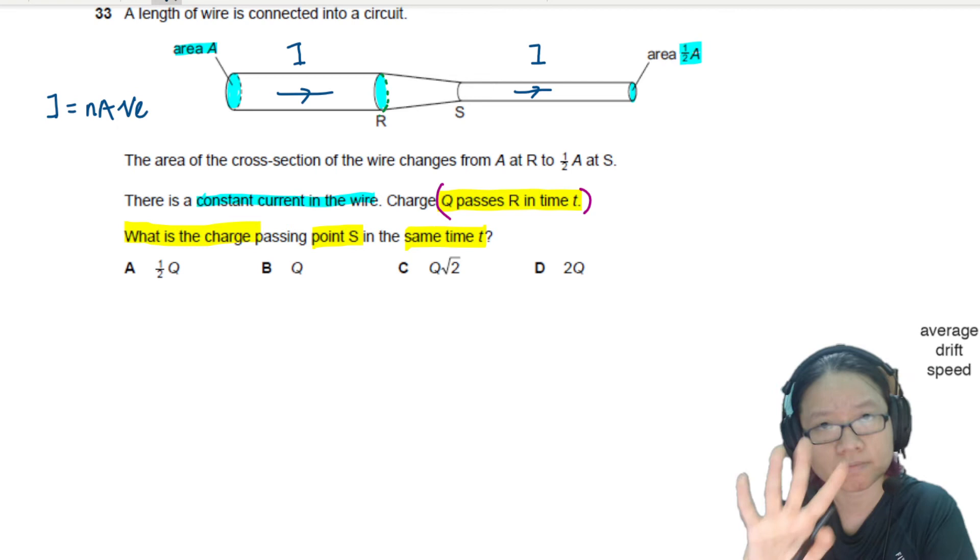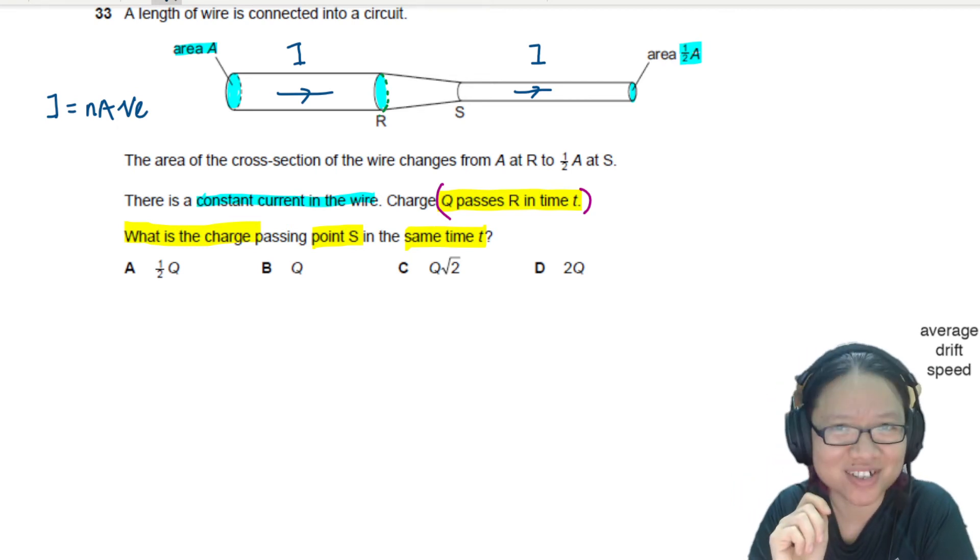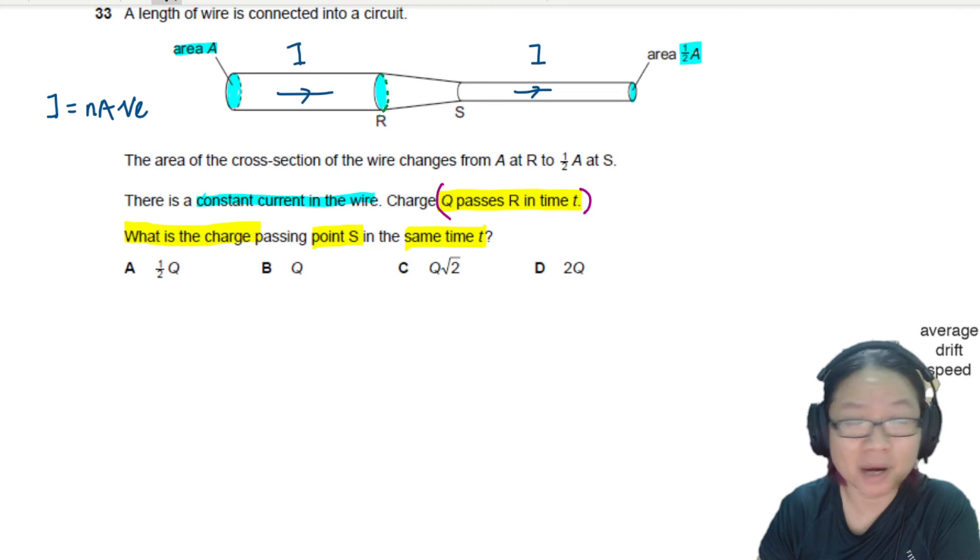because whenever I see this kind of wire you are used to asking yourself what is constant? Current is constant. And what exactly is current? Because let's say the amount of charge passing through here is Q...